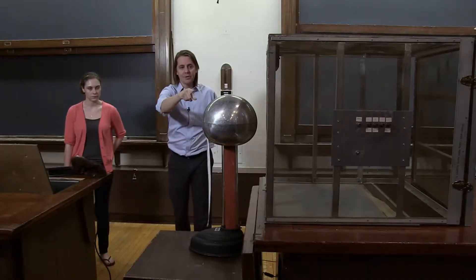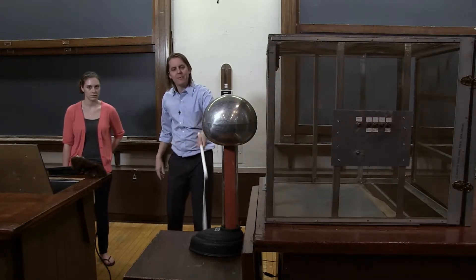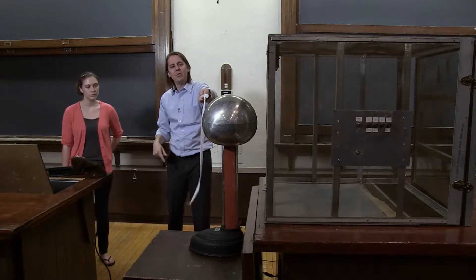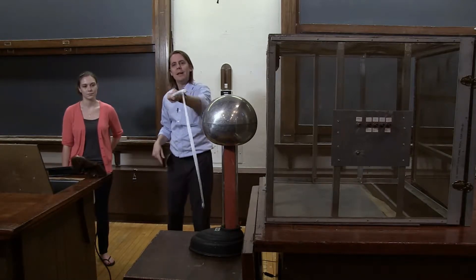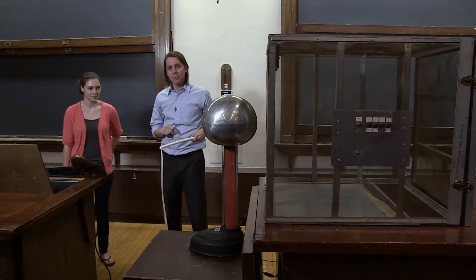It's got a Van de Graaff generator. So this is basically something that gets really charged up. This belt runs back and forth, picks up charge in the base, dumps it in the metal can, and it gets very high charge, will throw big sparks. You've probably maybe seen people play with these before.